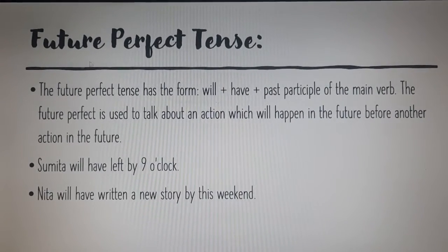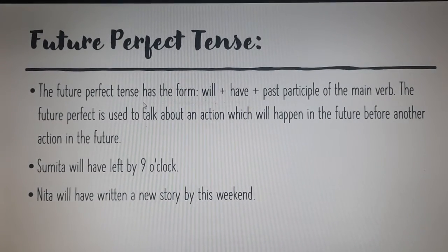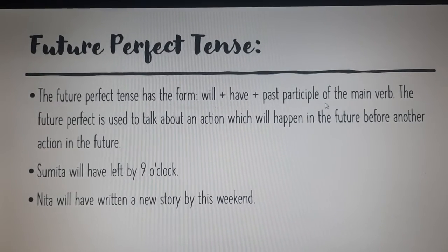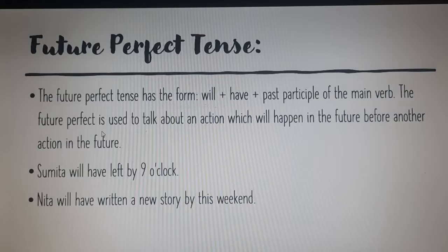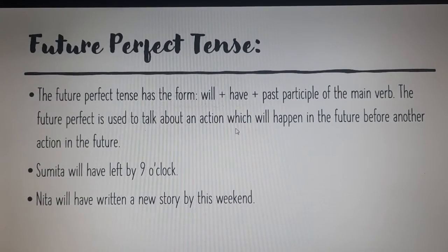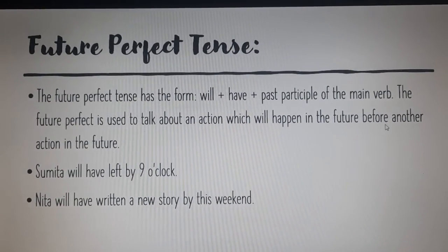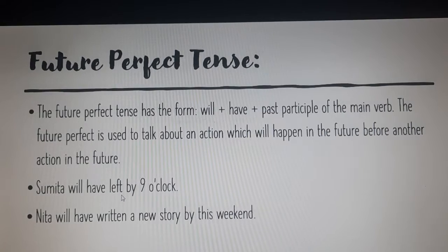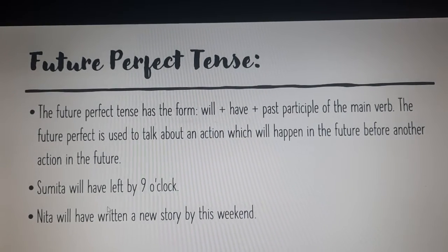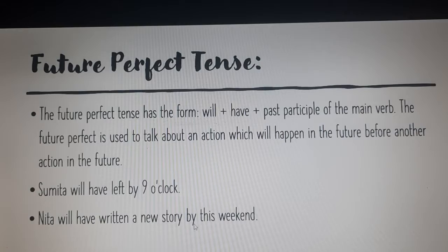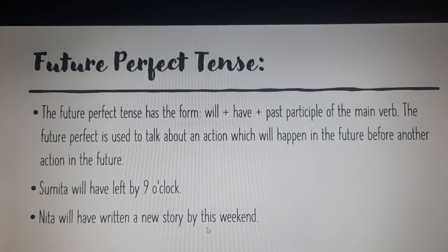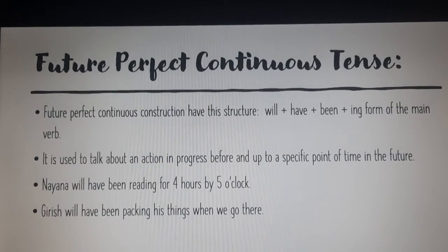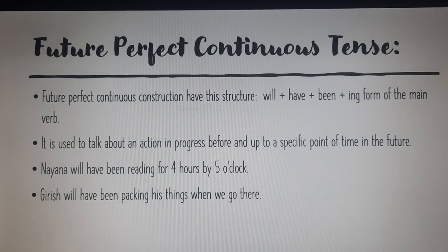The next one is future perfect tense. The future perfect tense has the form: 'will' plus 'have' plus the past participle of the main verb. It is used to talk about an action which will happen in the future before another action in the future. For example: 'Sumita will have left by 9 o'clock' and 'Neeta will have written a new story by this weekend.'